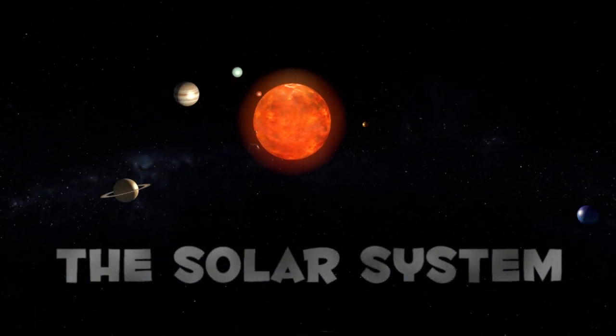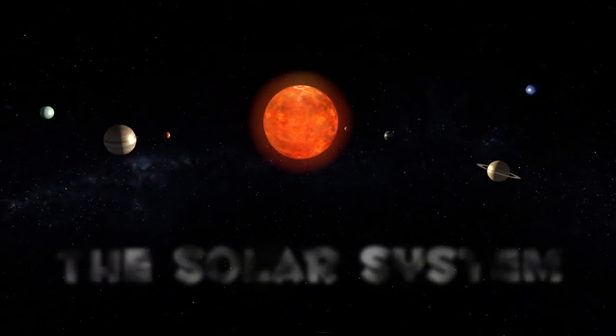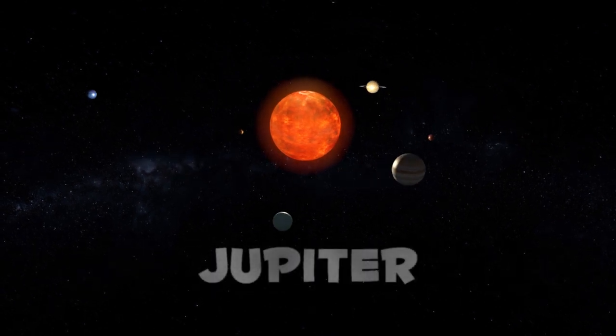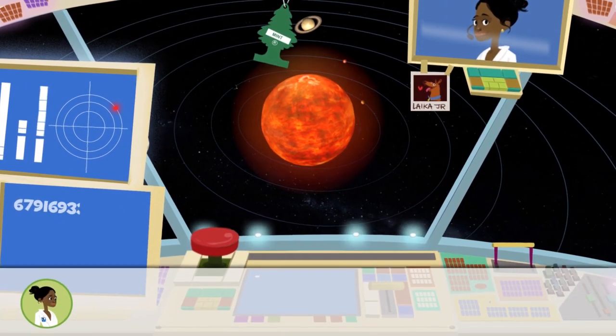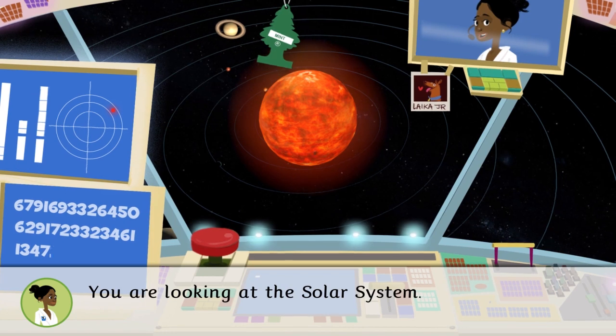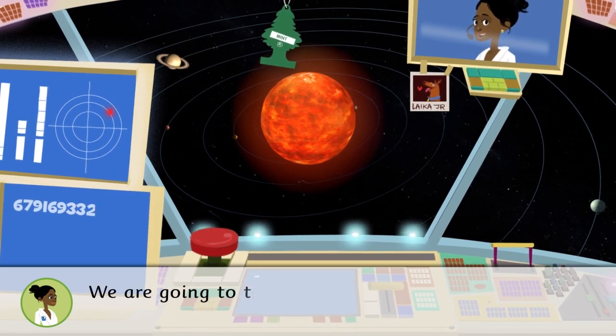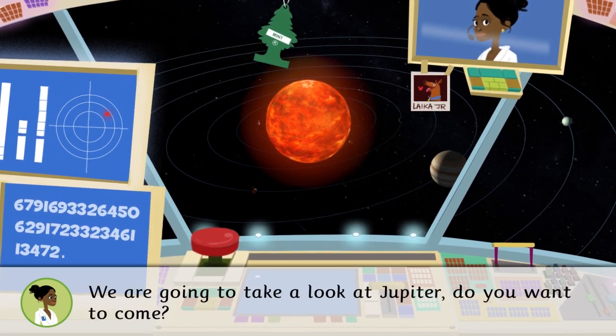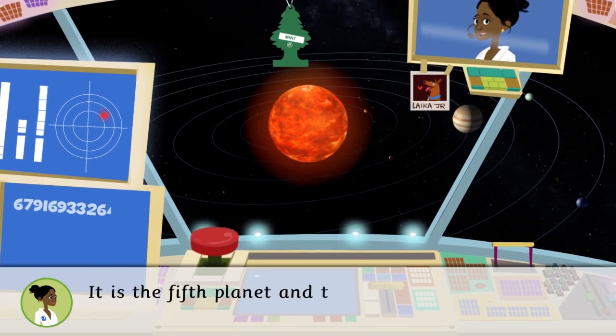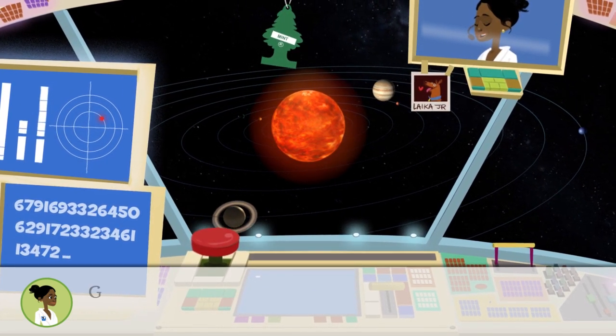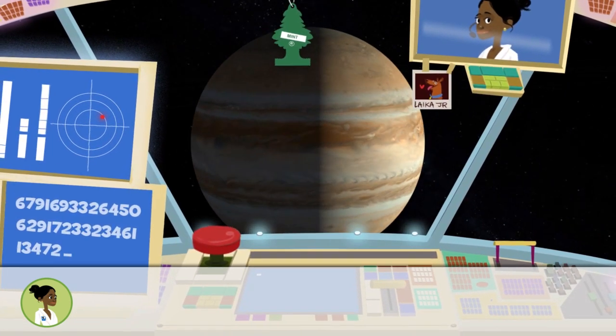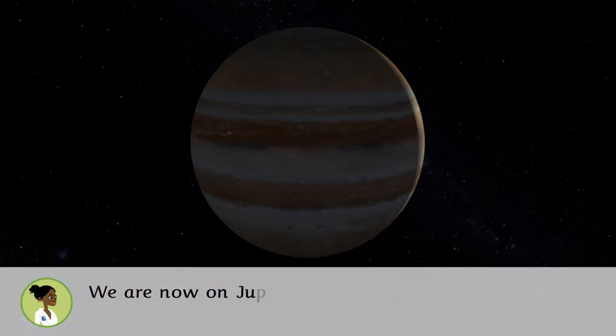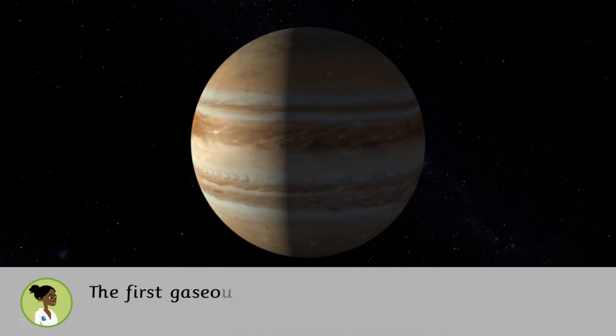Today we are traveling to Jupiter. You are looking at the solar system. Do you want to come? It is the fifth planet and the biggest in the solar system. Grab on, we're headed that way. We are now on Jupiter, the giant planet, the first gaseous planet of the solar system.